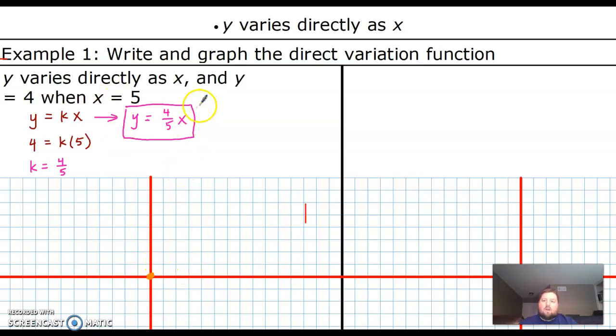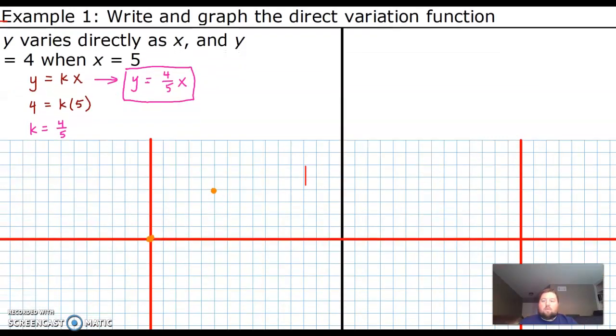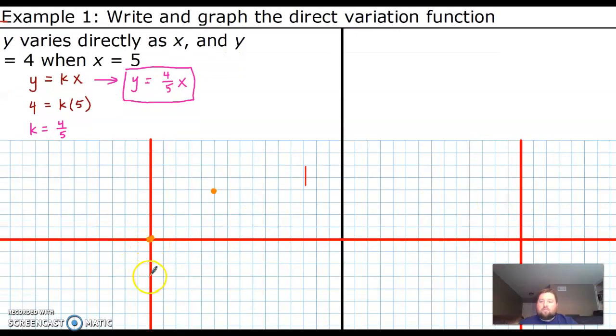And then your k is your slope. So you just do rise over run. Up 4 over 5. Right there. Remember you could also go down 4 and left 5. And there you go. Draw your line. That's the graph.